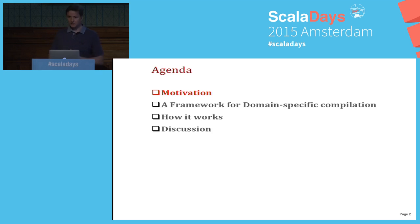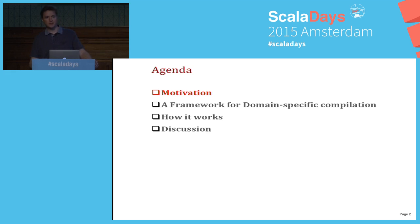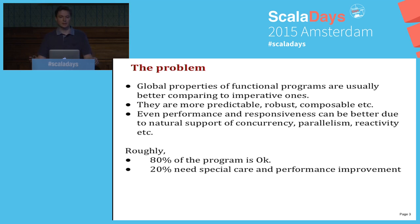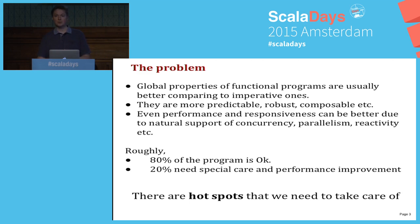I would like to say thank you to the organizers who put my talk after the previous one, because I don't need to motivate you if you were at the previous presentation — now you know why we need to use functional programming in large-scale applications. The global properties of functional programs are usually better compared to imperative ones: they are more predictable, robust, composable, and if we're talking about performance, they may be more responsive and better for parallelism. Roughly 80% of the program is okay in terms of performance, but 20% we need to give special care — these are hotspots which we need to take care of.